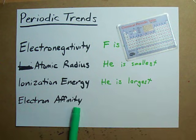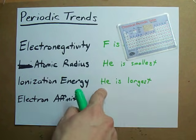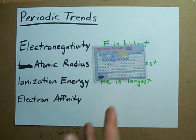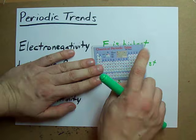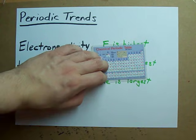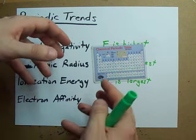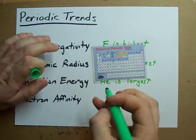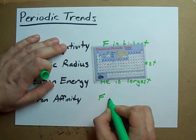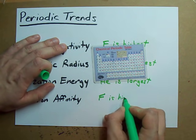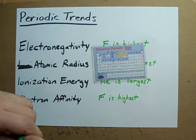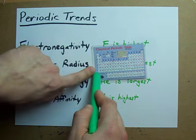Electron affinity is the amount of energy released when an electron is added to an atom. Which atoms are hungriest for electrons? The answer is halogens — halogens would kill to have that extra electron. I like to think that F has the highest electron affinity, while francium does not have an affinity for electrons.